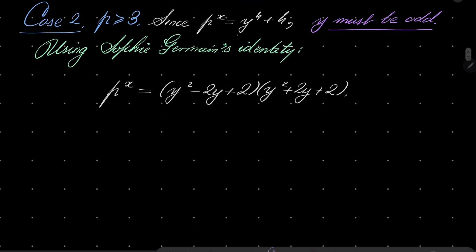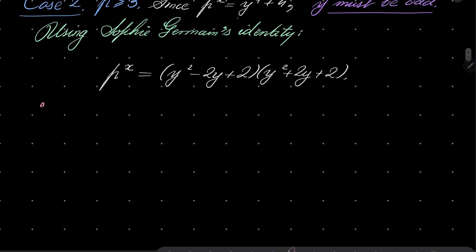Now I wish to consider a few cases. First case, maybe I should have started with it, but no matter. If y equals zero, then we have p^x = 4 and here we have no solutions since p is odd. Well, of course it's no solutions because I have stated that y must be odd. So let's check y to be 1.